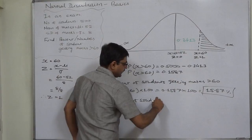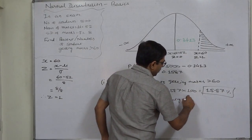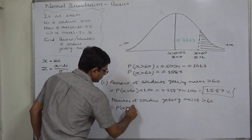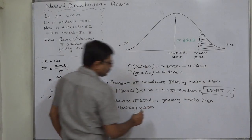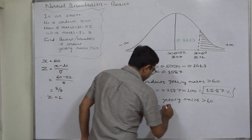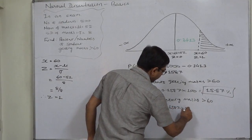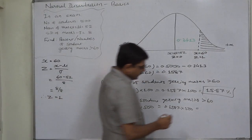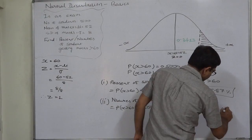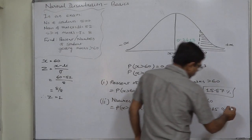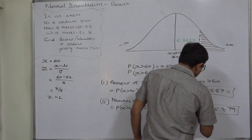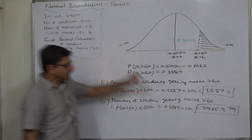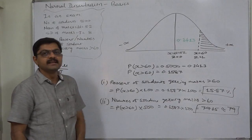The number of students getting marks more than 60 equals P(X > 60) multiplied by the total number of students, 500. That is 0.1587 times 500, which equals 79.35. Since the number of students can never be fractional, it is approximately 79 students. So out of 500 students who appeared in the examination, 79 obtained marks greater than 60.